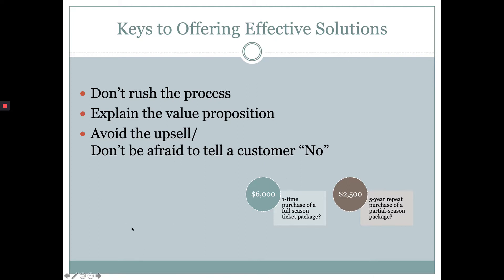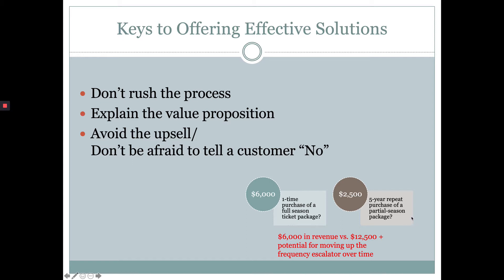Consider: what is better — a one-time purchase of a full season ticket package for $6,000, or a five-year repeat purchase of a partial season ticket package? If you do the math, the lower dollar amount package is actually the better revenue generator for the team — $6,000 in revenue versus $12,500 over that five-year period. You also have the potential to move that partial game purchaser up the frequency escalator over time. Avoiding the upsell is important because what we're really looking for is retention — we want to bring customers back with a package that fits their needs.